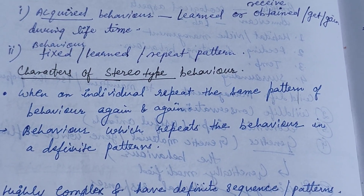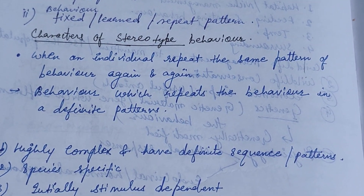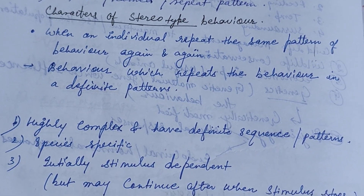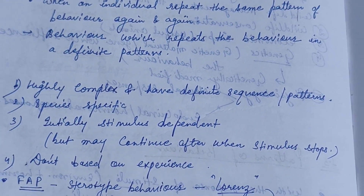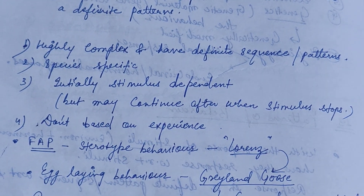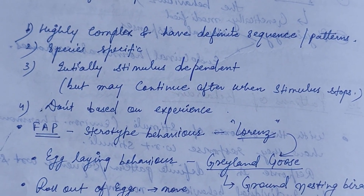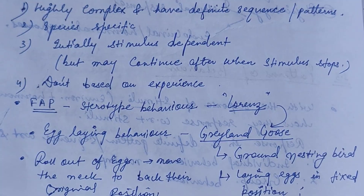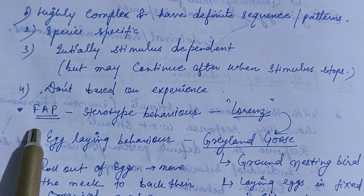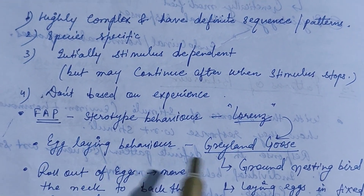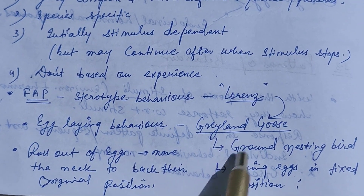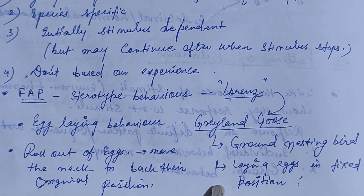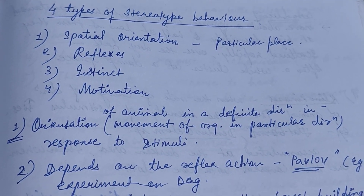Fixed or repeated patterns are termed stereotype behavior. Characteristics of stereotype behavior: when an individual repeats the same pattern again and again it is termed stereotype behavior, which is highly complex and has a definite sequence. It is species-specific; initially stimulus-dependent but may continue after stimulus stops; not based on experience. Stereotype behavior also comes under fixed action pattern, as given by Konrad Lorenz. Example: egg-laying behavior of a greylag goose — rolling eggs and moving the neck back to original position.